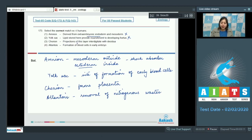Number 3, Chorion. Projections of this layer interdigitate with decidua. This is correct as chorion participates in the formation of placenta. Number 4, Allantois. Formation of blood cells in early embryo. This is incorrect as the function of allantois is to help in the removal of nitrogenous wastes. So the correct answer here becomes option number 3.